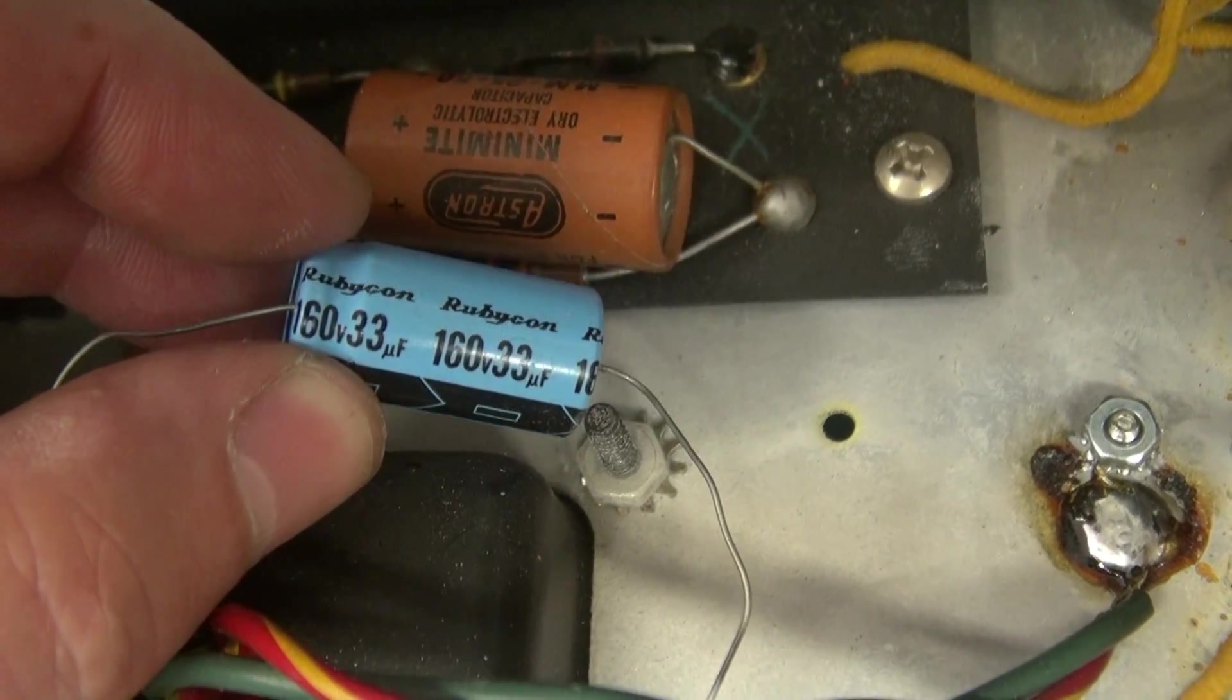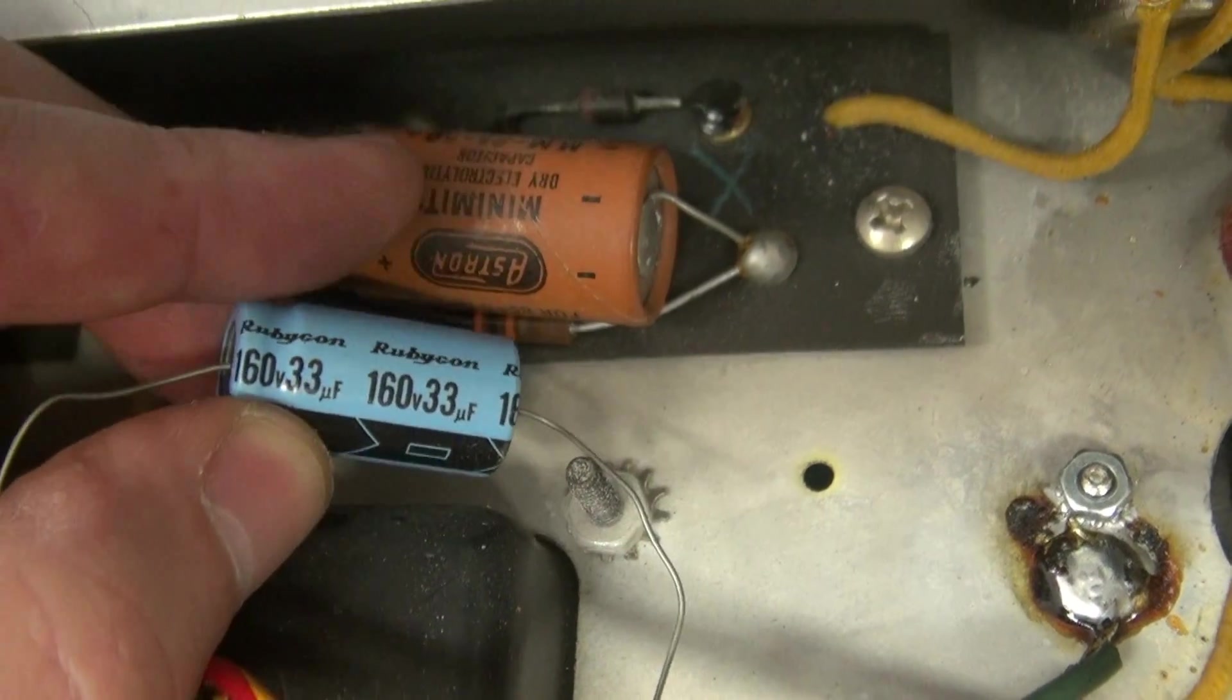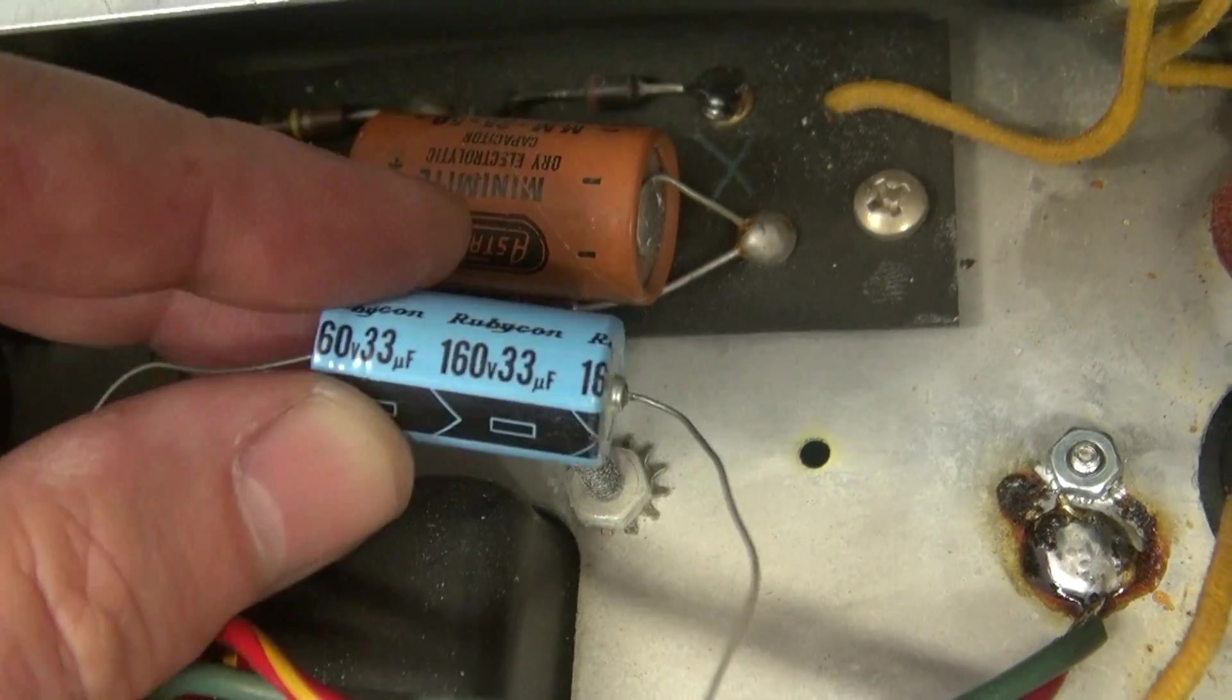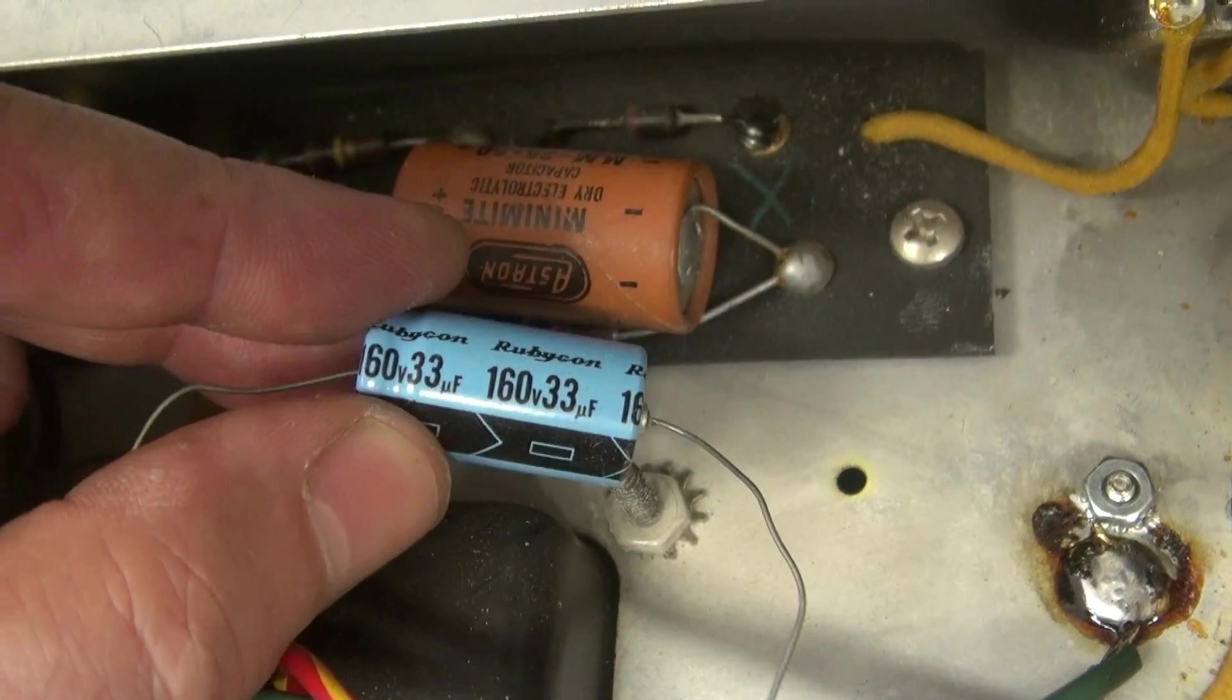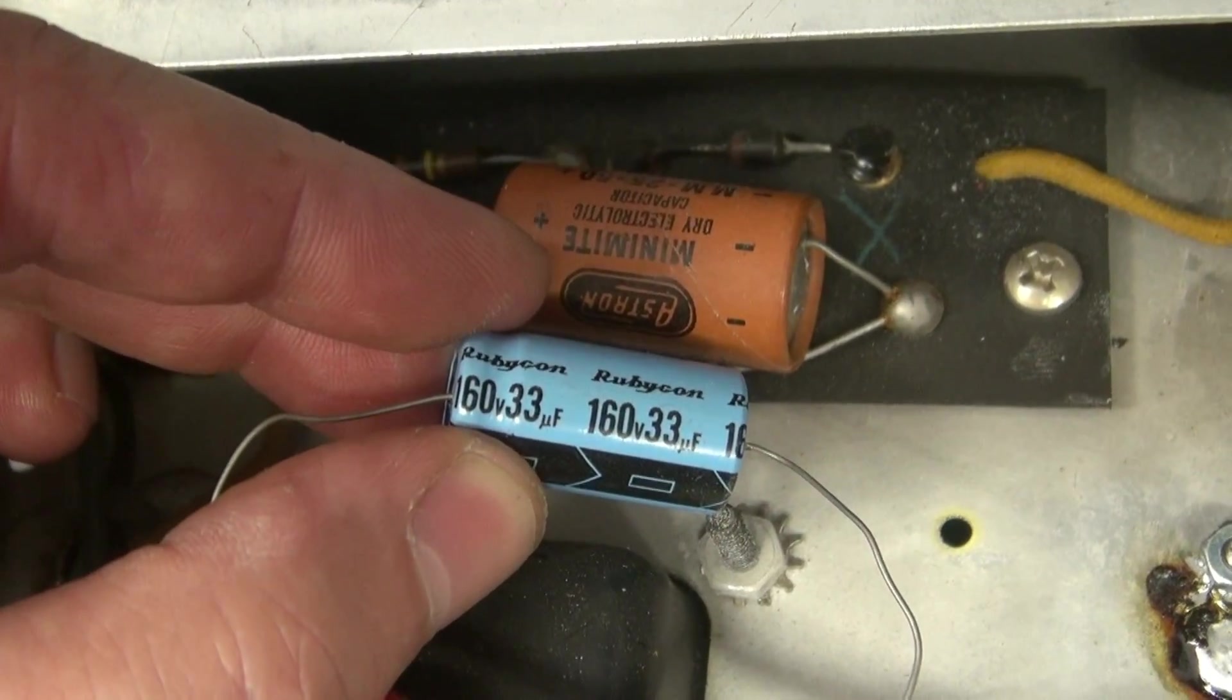So here's what I'm going to replace it with. I always bump the value up a little bit. So it's a 33 instead of a 25 microfarad. Watch your polarity, people. Keep those negatives to the right. You hook this thing up backwards, it's going to go kerpowie, and your output tubes will follow.